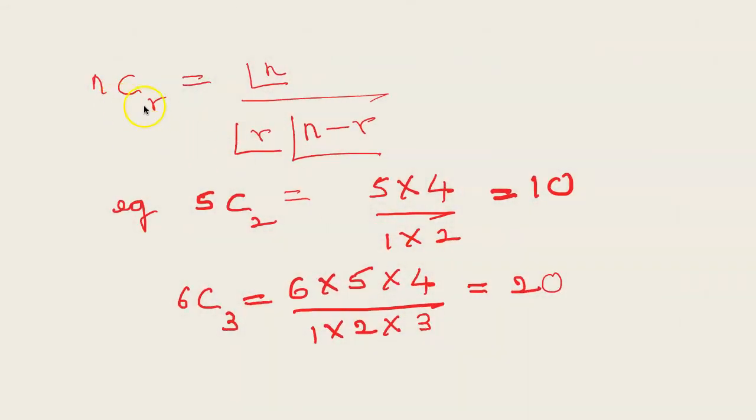For example, nCr is given by the formula nCr = n factorial by r factorial into n minus r factorial. So 5C2 will be 5 factorial by 2 factorial into 3 factorial. An easy way of computing is we start from 5 and go back 2 times, 5 into 4, start from 1 and go up to 2. So it is 10.